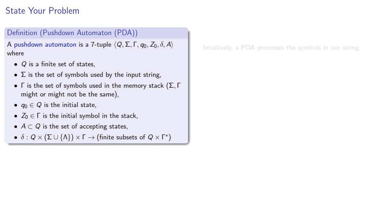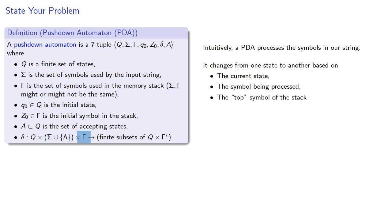Intuitively, a pushdown automaton processes the symbols in our string, and it changes from one state to another based on the current state, the symbol being processed, and the top symbol of the stack. It's convenient to regard z₀ as the end of the stack symbol, nothing of any importance is stored beyond it.